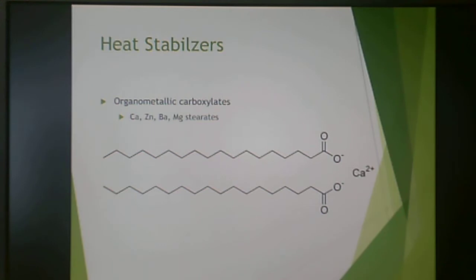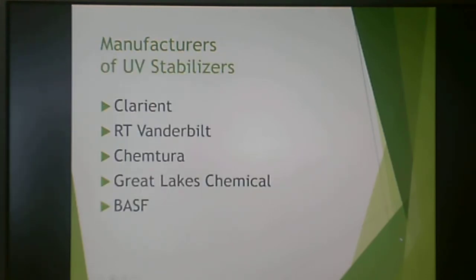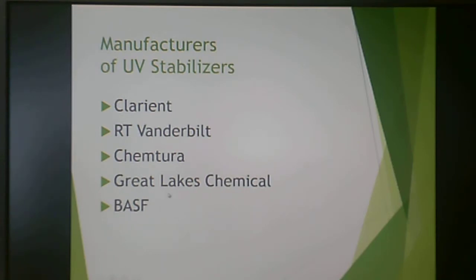Heat stabilizers are also used. These are often organometallic carboxylates derived from oils or fats, complexed with calcium ions — for example, a stearate chain complexed with calcium. These are very inexpensive and easily derived. Some manufacturers of UV stabilizers include BASF — if you've ever seen their commercial, they say 'we don't make the things you buy, we make the things you buy better.' They make a lot of polymeric additives and colorants. Clariant and Great Lakes Chemical are others you'll see frequently if you work with additives.